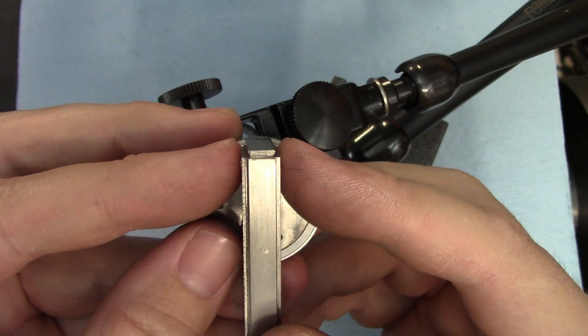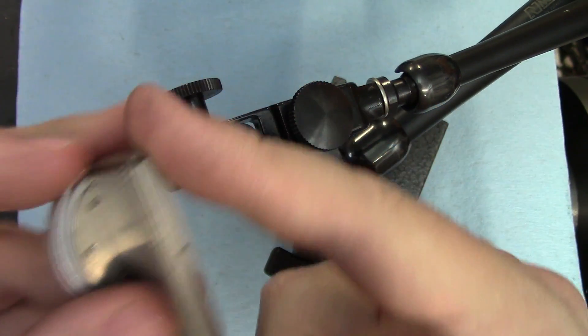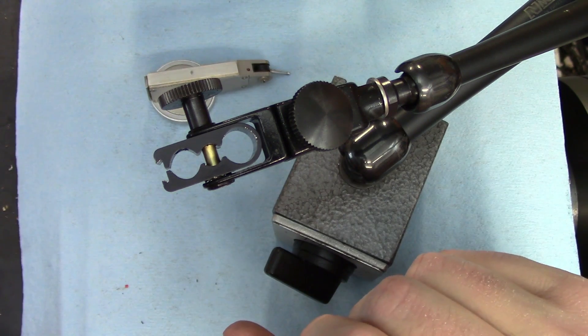Let's get back to the dovetail mount I mentioned earlier. These are used extensively on dial test indicators, and as I mentioned before, my Noga base has a dovetail built into its clamp.